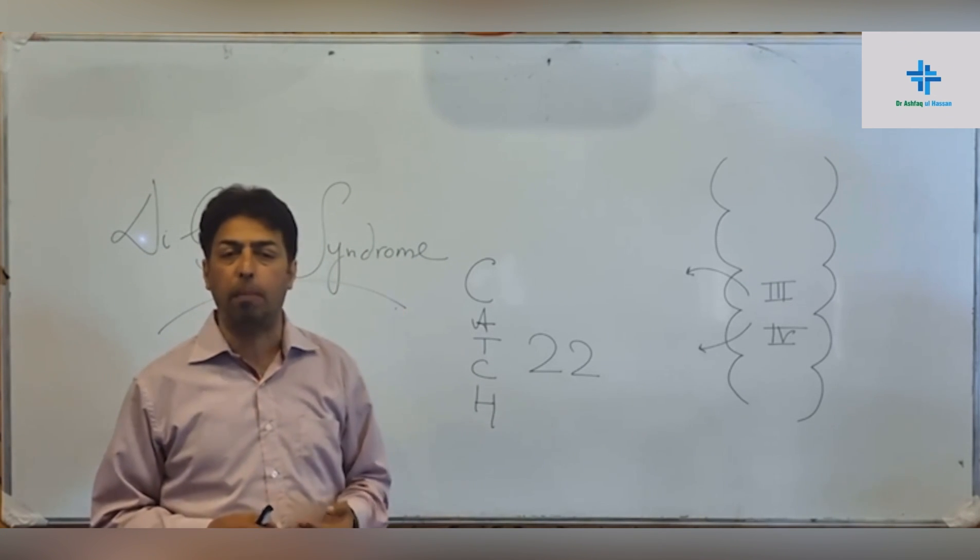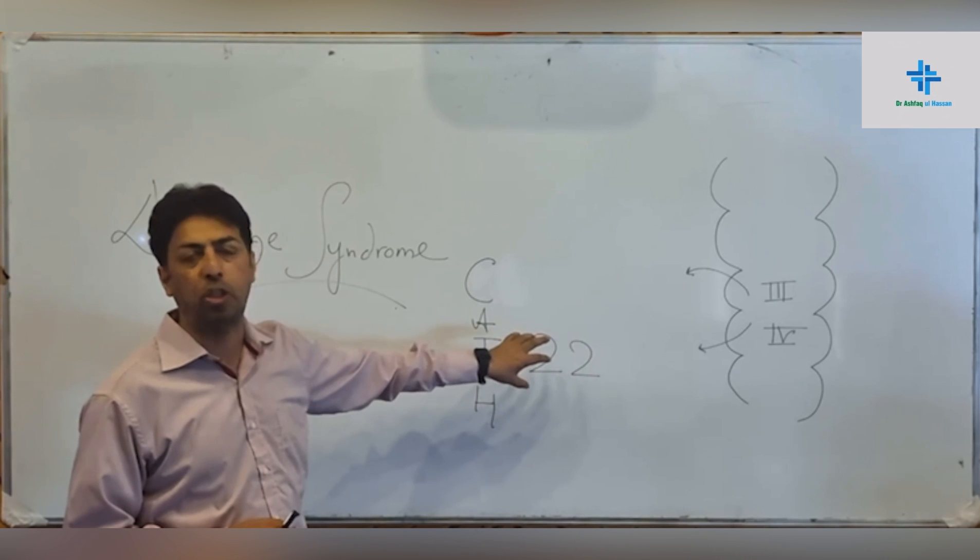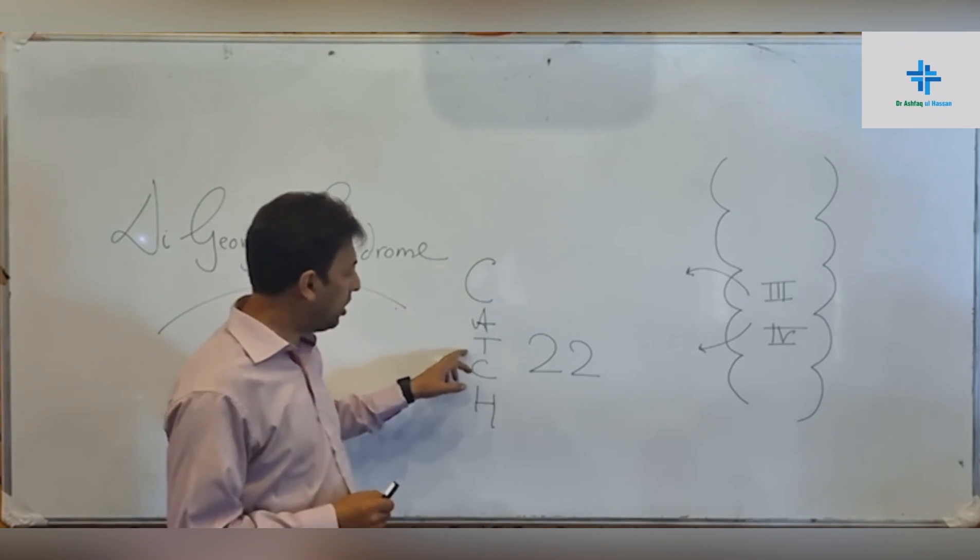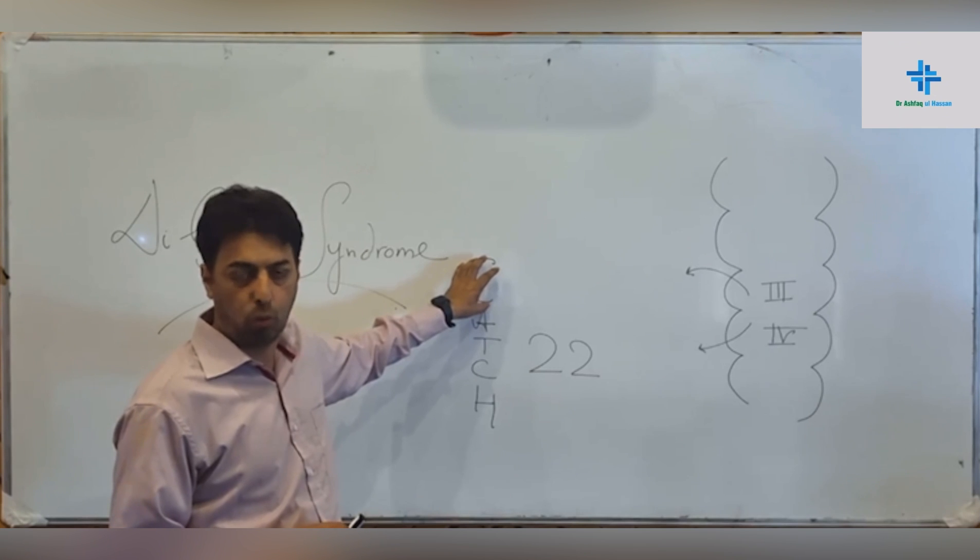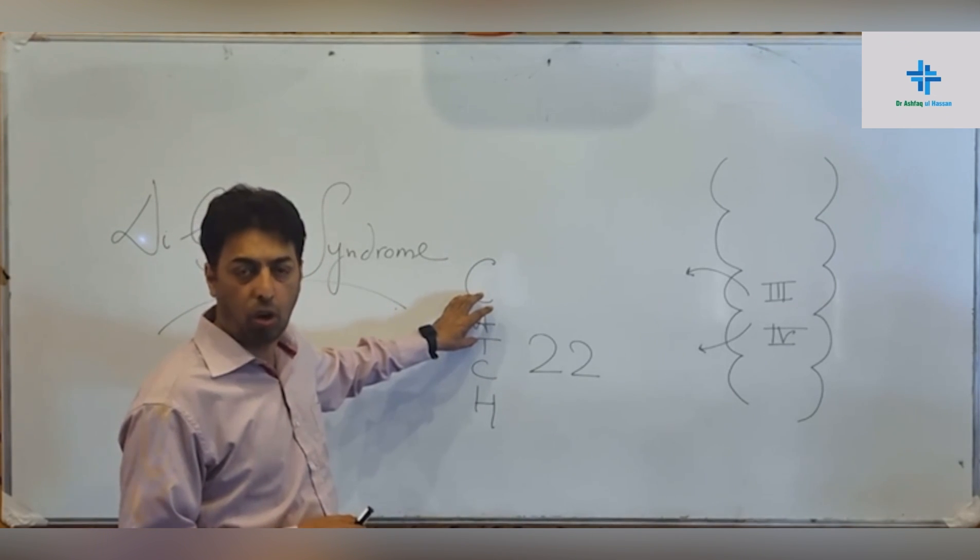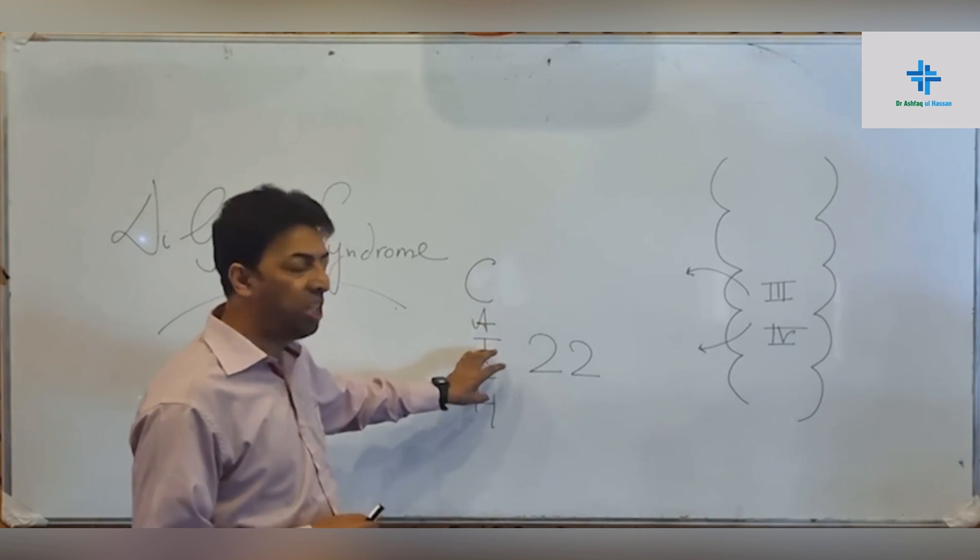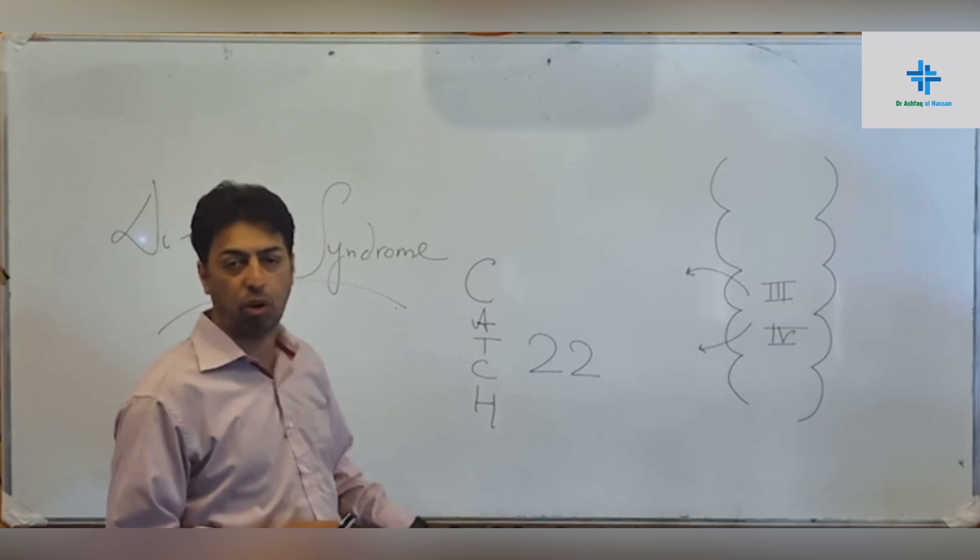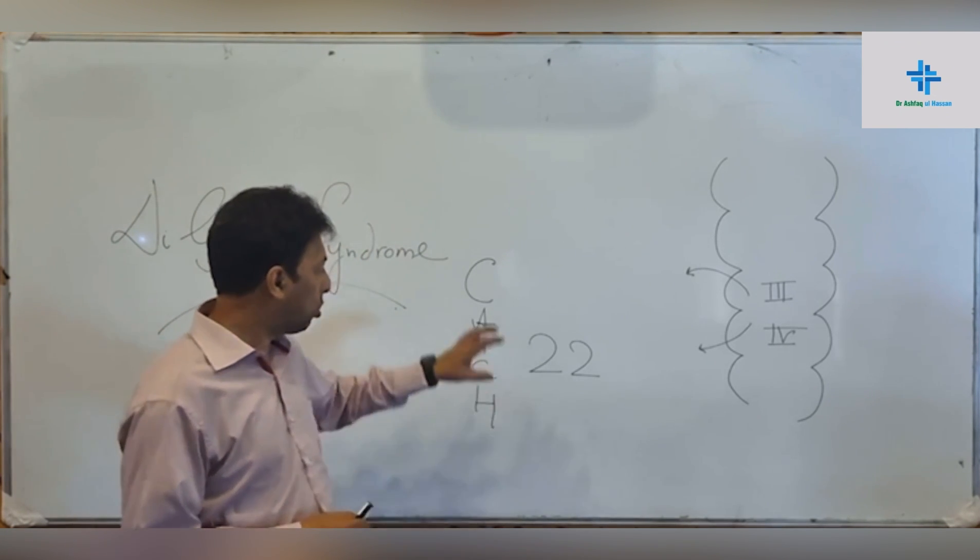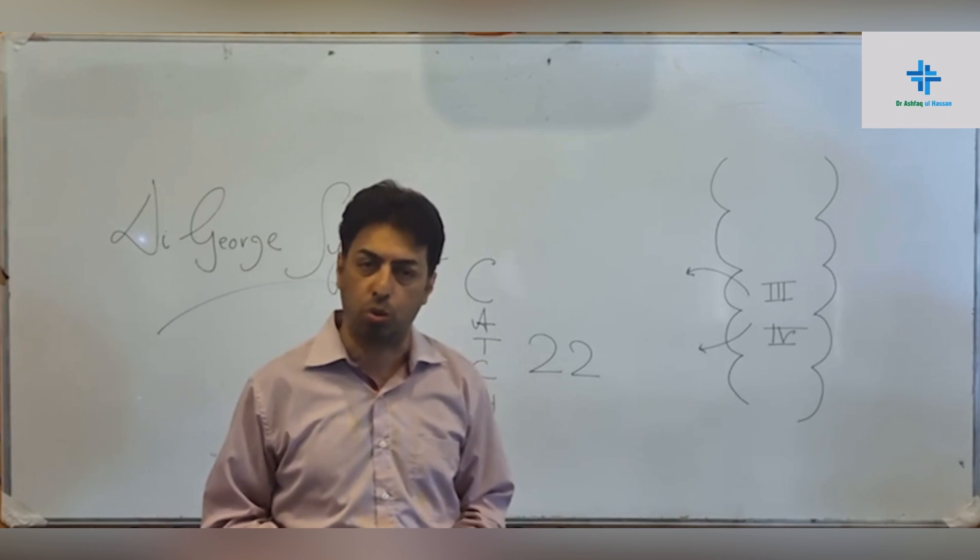We give it the name CATCH22. C-A-T-C-H 22, with 22 referring to chromosome 22. C stands for congenital heart defects. A stands for abnormal facies or facial dysmorphia. T stands for thymic hypoplasia. C stands for cleft abnormalities like cleft lip and cleft palate. H stands for hypocalcemia or hypoparathyroidism.